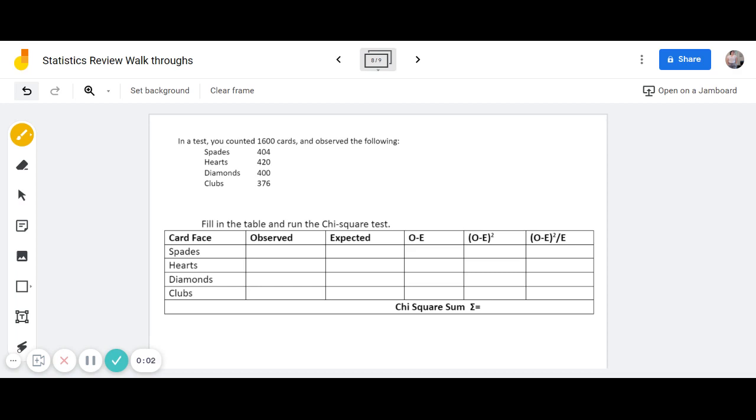So now we are going to go ahead and actually do our chi-squared stats test. In a test you counted 1,600 cards and observed the following: 404 spades, 420 hearts, 400 diamonds, and 376 clubs.